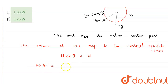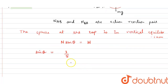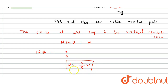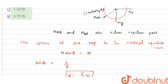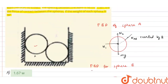Now, sine theta equals 3 by 5. Therefore, N times (3/5) equals w, which gives us N equals 5/3 times w. This is the value of the contact force N that has been asked in the question.